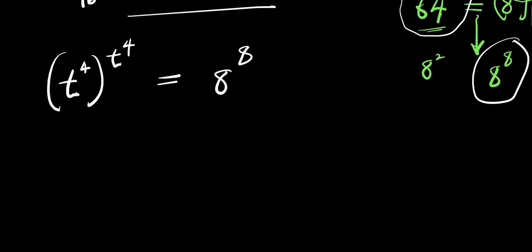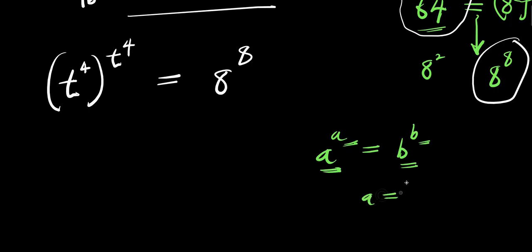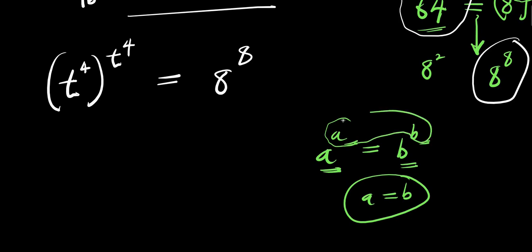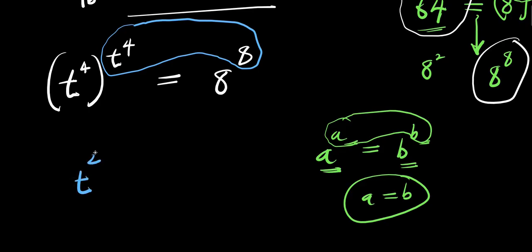Having done this, the next thing is to apply this identity: if a to the power of a equals b to the power of b, then since the base and the exponent are the same on both sides, we can conclude a equals b. So we equate the bases: t to the power of 4 equals 8.